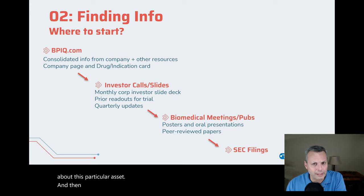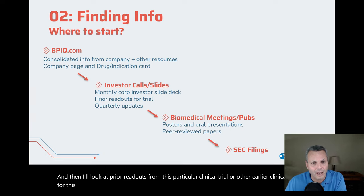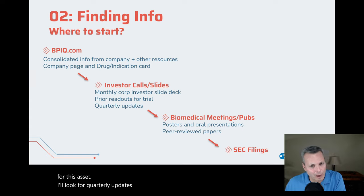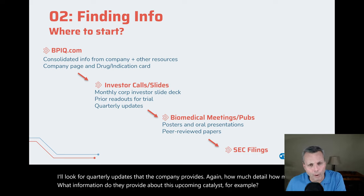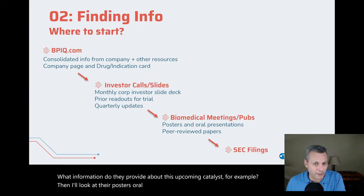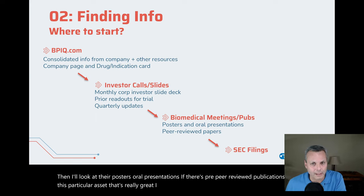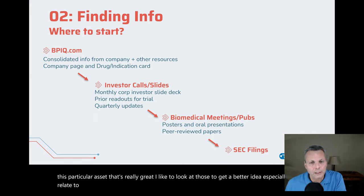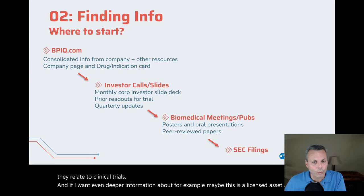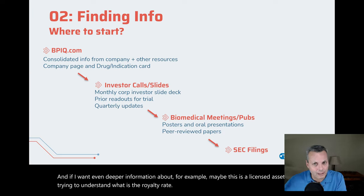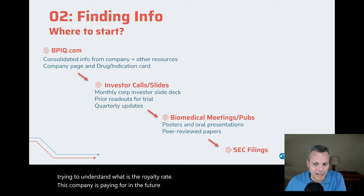Then I'll look at prior readouts from this particular clinical trial or other earlier clinical trials for this asset. I'll look for quarterly updates — how much detail, what information do they provide about this upcoming catalyst. Then I'll look at their posters, oral presentations, and if there are peer-reviewed publications about this particular asset, that's really great. And if I want even deeper information — for example, maybe this is a licensed asset and I'm trying to understand the royalty rate — I'll take a look at the SEC filings.